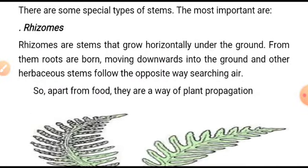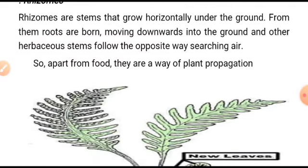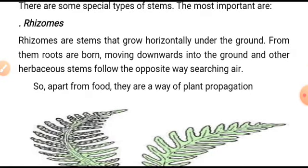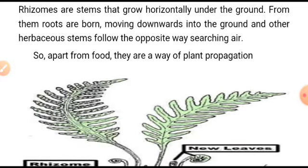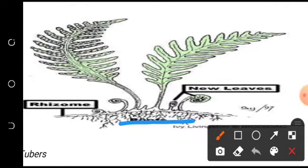Special types of stem: the most important are rhizomes. Rhizomes are stems that grow underground. Roots are born moving downwards into the ground while the shoot system goes the opposite way, searching upward. Apart from food storage, rhizomes are also a way of plant propagation. They like to remain underground.